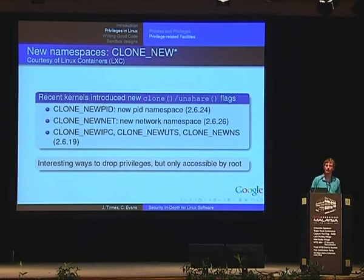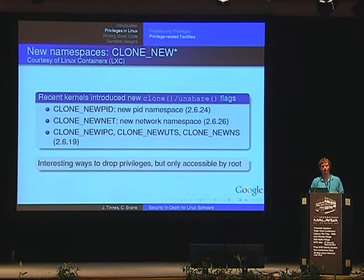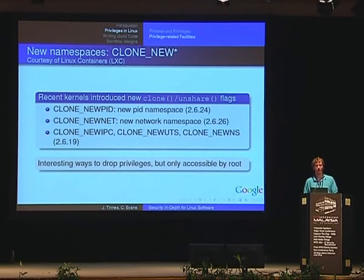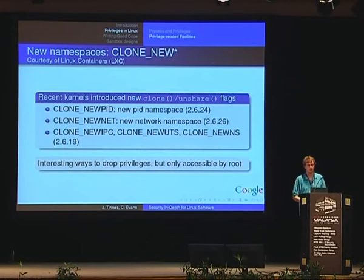Something not yet very well known is Linux namespaces, which have been available since Linux 2.6.19 with very recent additions even in 2.6.26. They are a feature courtesy of Linux Containers, which allows you to create many virtual containers on the same machine. In recent kernels you have CLONE_NEWPID, which gives a new PID namespace to your process, and CLONE_NEWNET, which gives a new network namespace — we'll see how to use that to drop privileges. However, these are also only accessible by root.